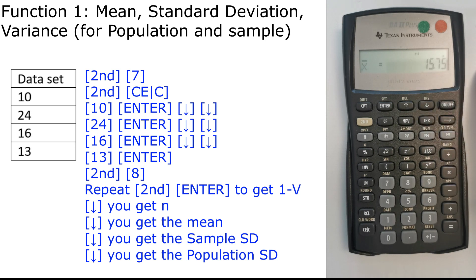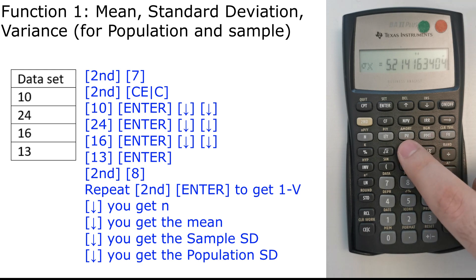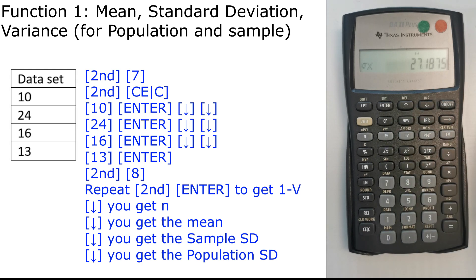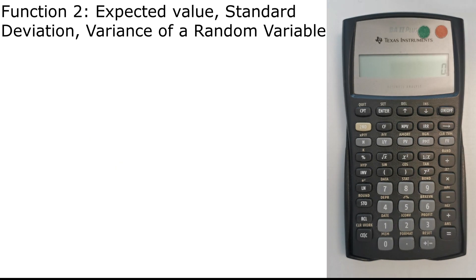We have the average of this data set is 15.75. The standard deviation if it was a sample, Sx, is a sample standard deviation as 6. And the population standard deviation is 5.2. If we want to calculate the variance, we just square the standard deviation. So the variance of a population is 5.2 squared, we get 27.